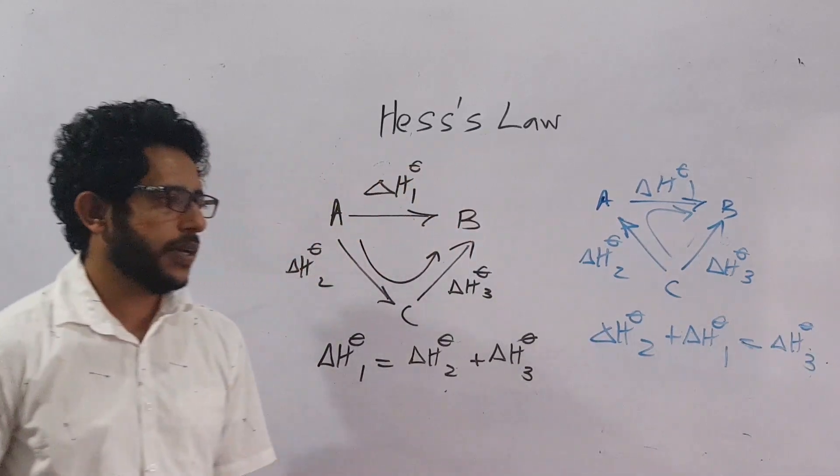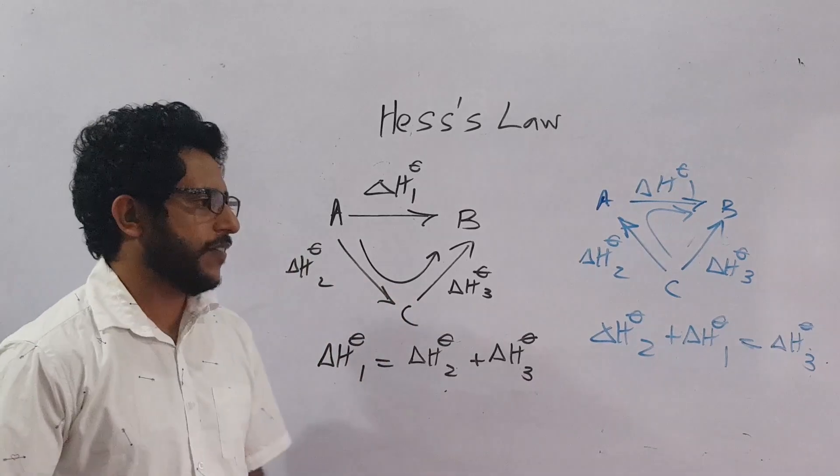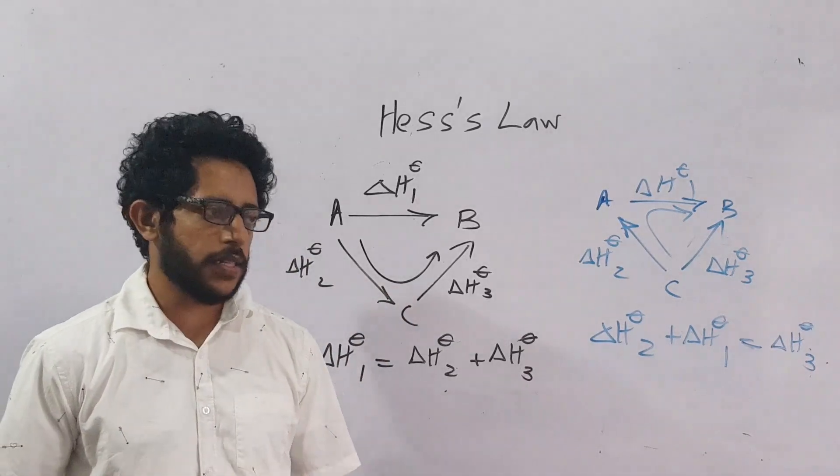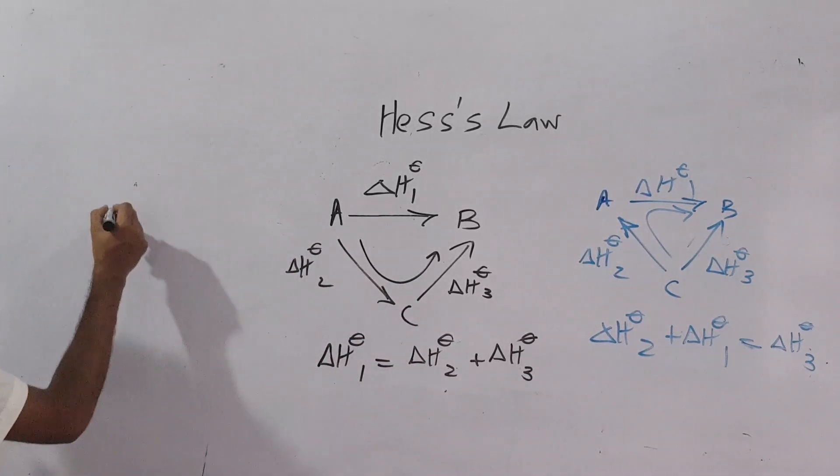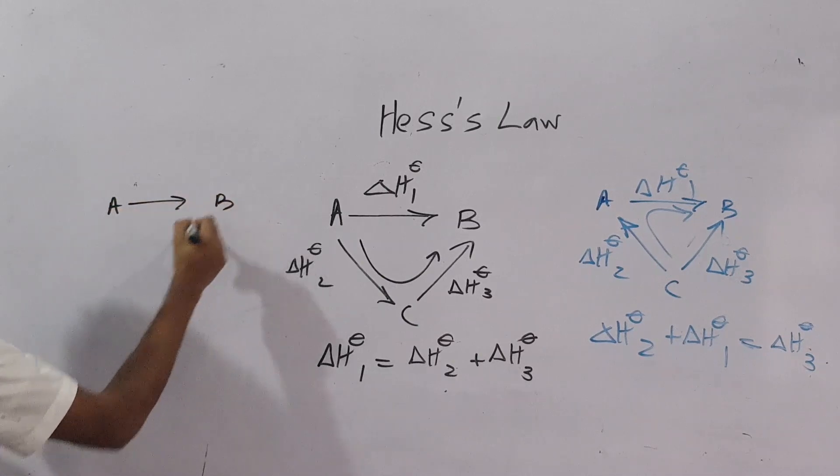That's what Hess suggested. We call this stuff as enthalpy cycles. Another one, if I write something like here, A goes to B, C is there, A gives C, B gives C.